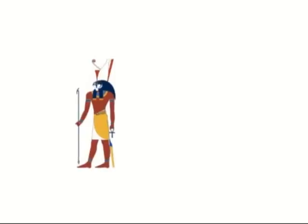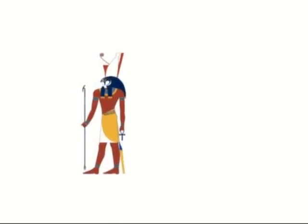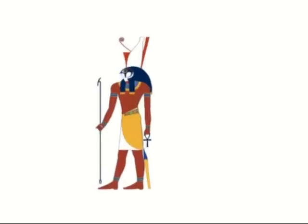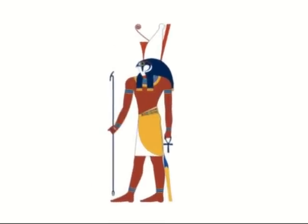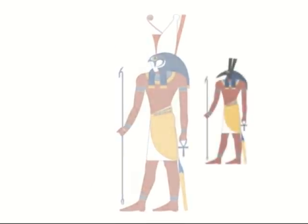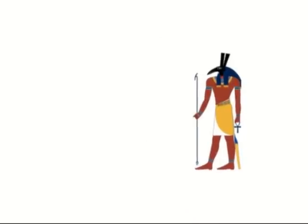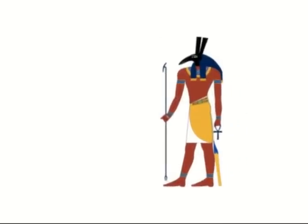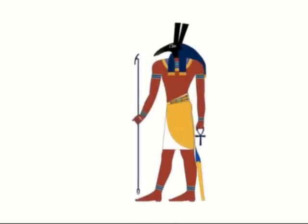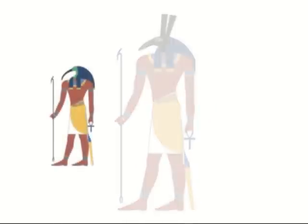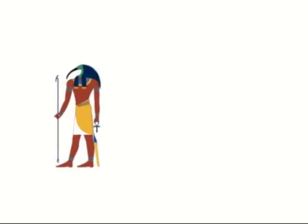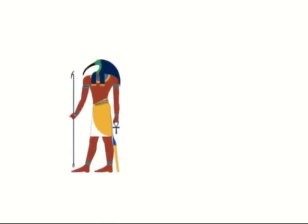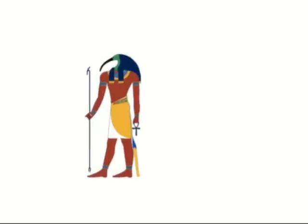The two eyes of Horus represented the heavenly bodies sun and moon. A famous Egyptian myth is about the conflict of Horus and his opponent Seth, god of gloom. In a fight, Seth gouged out an eye of Horus and smashed it into six pieces. Toth, the god of magic and healing, collected the pieces of the eye and coalesced them. He delivered the cured eye to Horus.